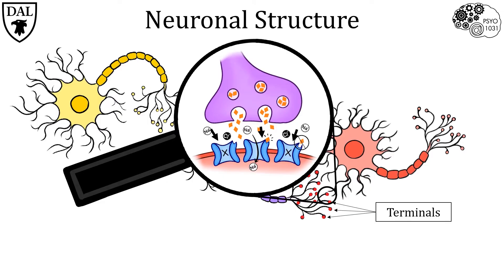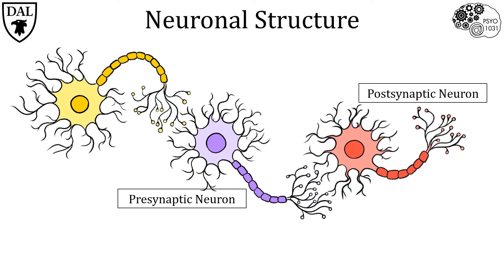The arrangement of neurons in relation to the synapse gives us the terminology to describe the direction of information flow. This is why we call the sending neuron the pre-synaptic neuron, as it is found before the synapse, and the receiving neuron the post-synaptic neuron, as it is found after the synapse.